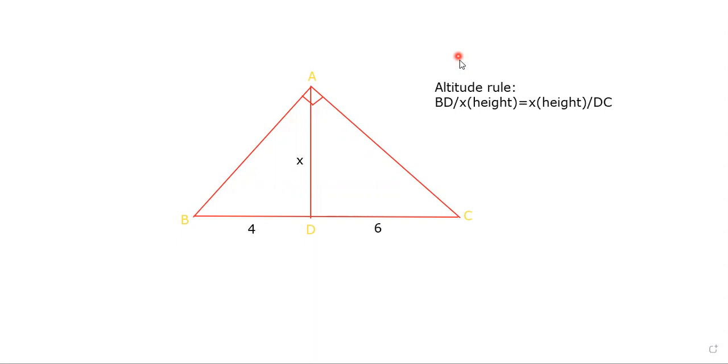Just to refresh, the altitude rule is BD over x, which is the height, equals x over DC. So the left portion over the height equals the height over the right portion.